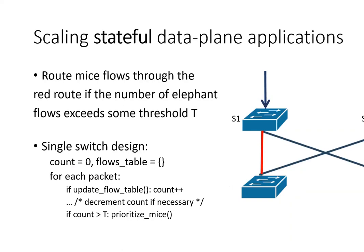However, if there are too many elephant flows, we would like to route mice flows through the red link. So we write the following code and run it on S1. The switch maintains a counter of elephant flows and a flows table. On each packet, the switch updates the flow table and the counter, and if the counter exceeds the threshold, then it changes the routing policy.